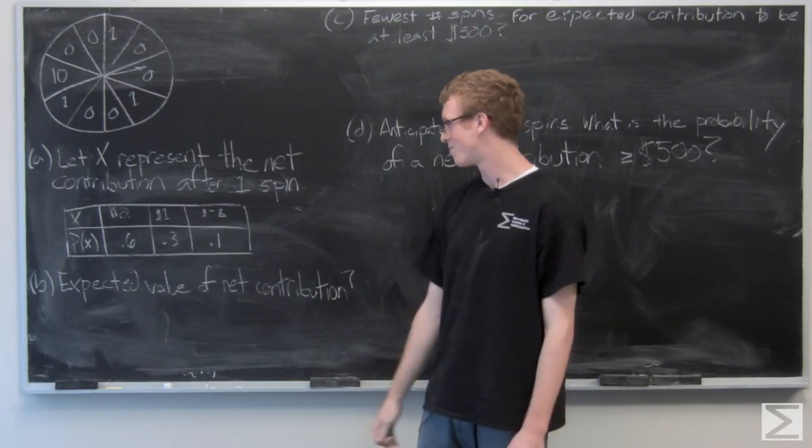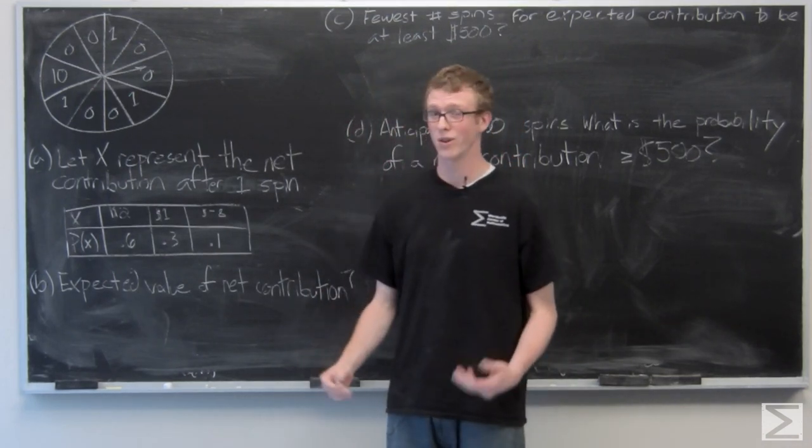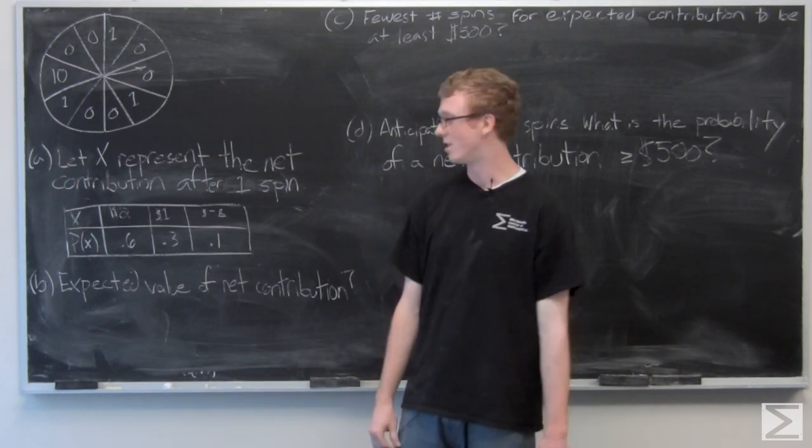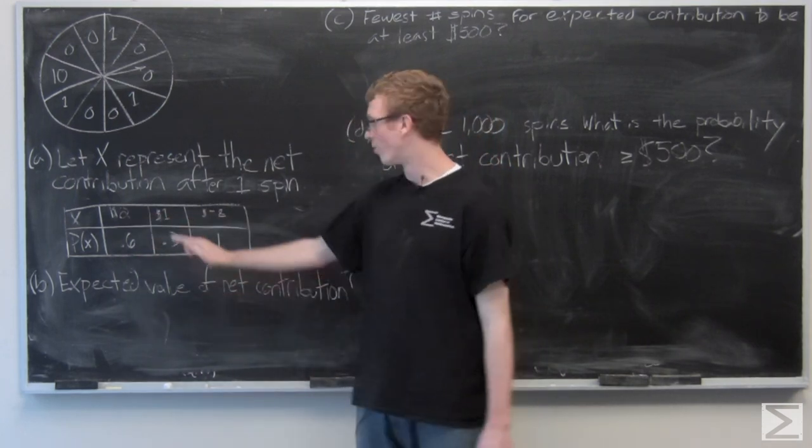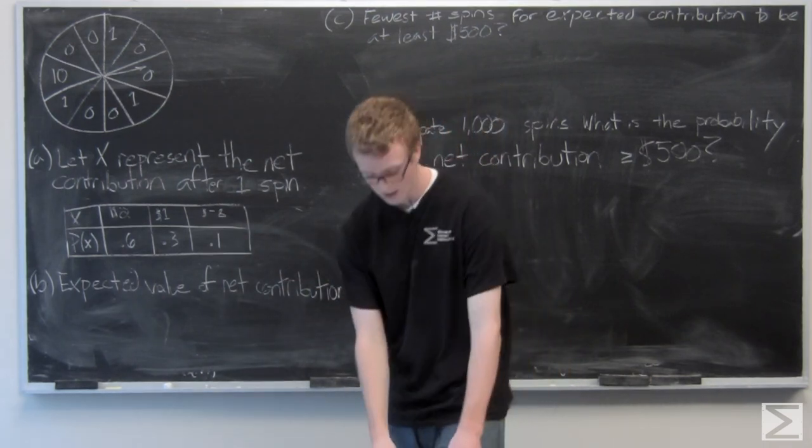Now we need to find the expected value of the net contribution, also the average of what the net contribution after one spin is going to be. All we need to do is multiply out 2 times 0.6, 1 times 0.3, negative 8 times 0.1 to find out what that expected value is going to be.